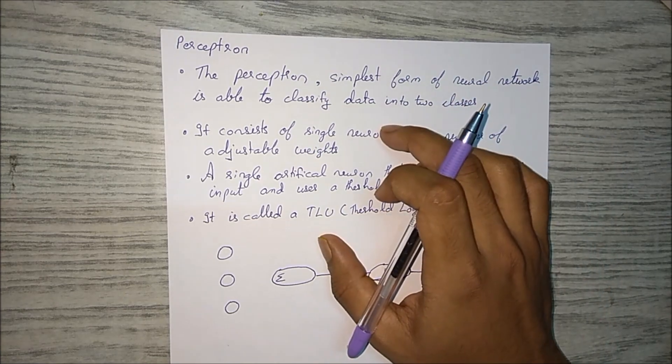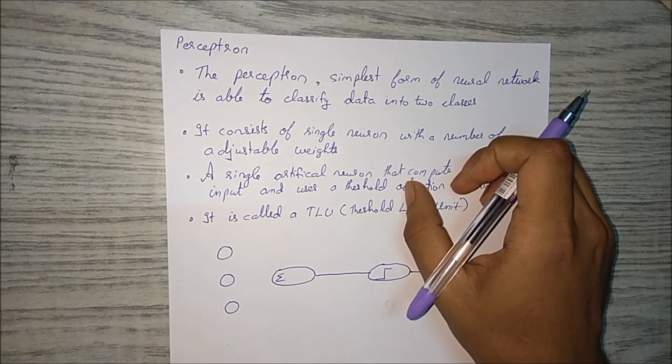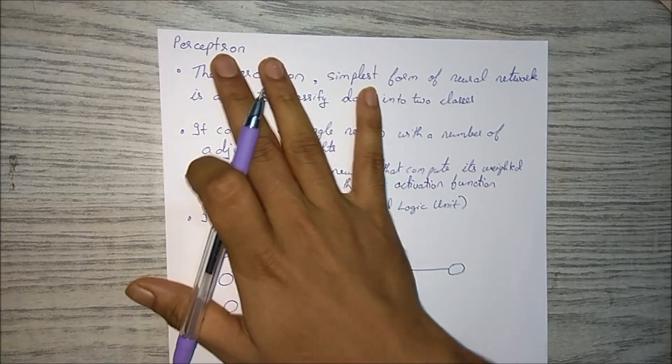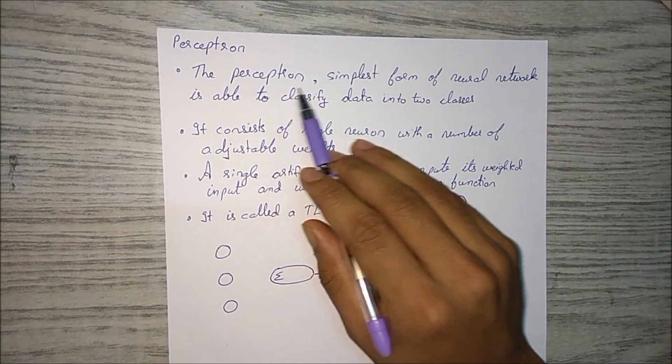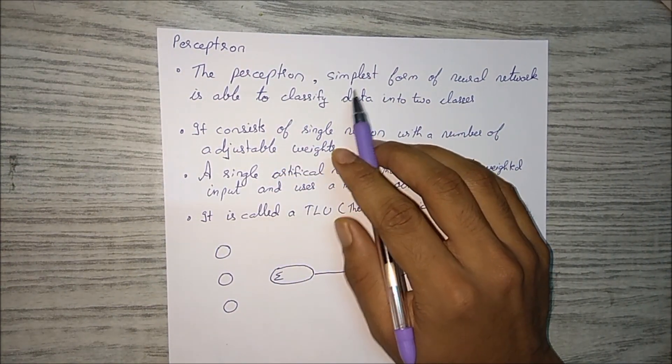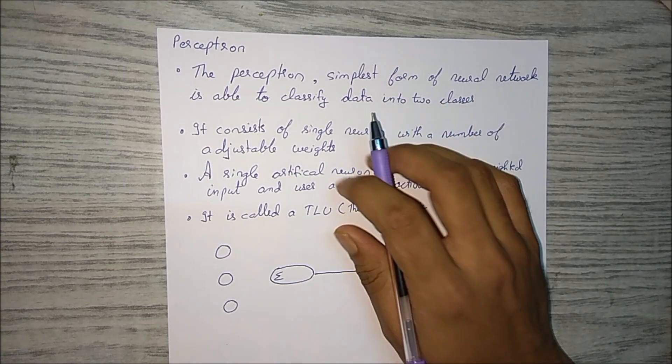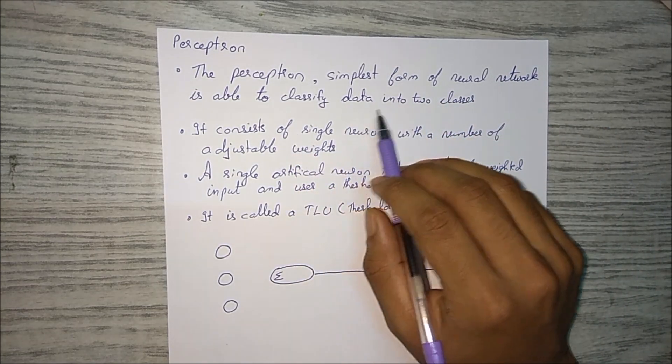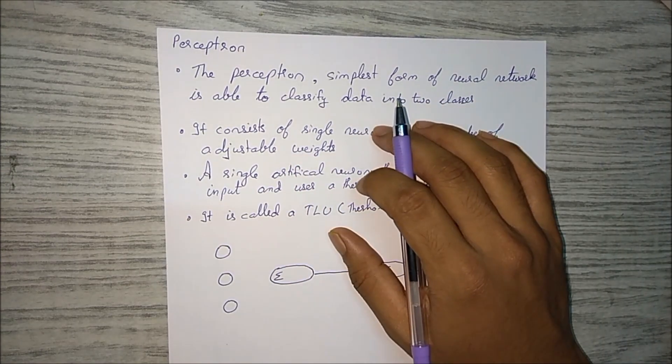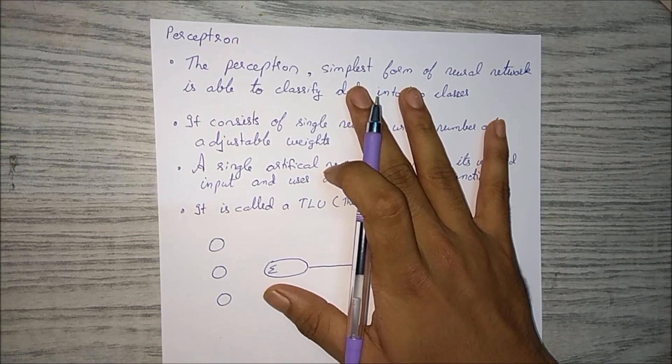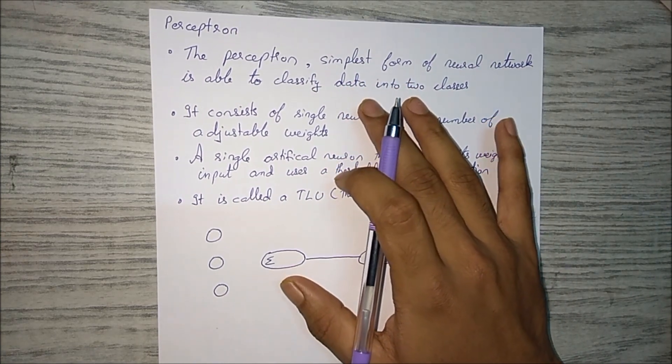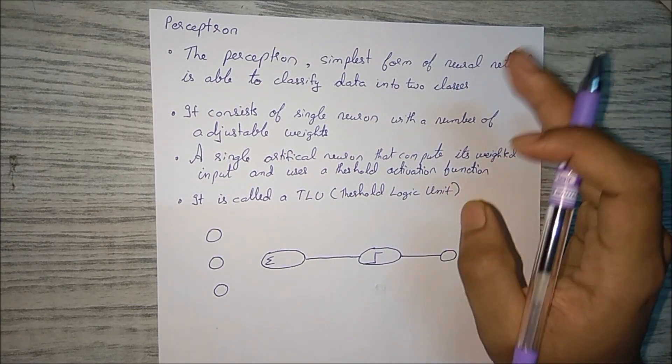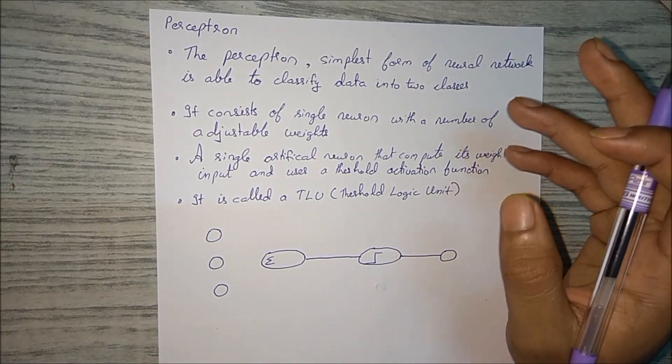From one neural network neuron to another neuron. So let's get started with perceptron. The perceptron is the simplest form of neural network and is able to classify data into two classes. So what this perceptron does is it classifies the data into two classes - what are the two classes? Input and output class.